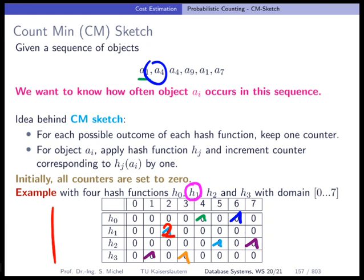And now we see the next element is a4 again. And since it's a4 and it's a hash function, so it's a function, the output is the same. So then h0 will make a 2 out of the 1 here, and make a 3 here, and so on. So we have a 2 here and a 2 here. And then this whole procedure continues.